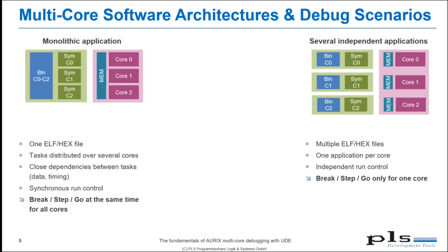The opposite case is a monolithic multi-core application, where all tasks and functions are distributed over all available cores. Here we have close dependencies between the cores and we need synchronization of the debug actions. All cores must be stopped synchronously if the application hits a breakpoint or if you do single-stepping on one of the cores.